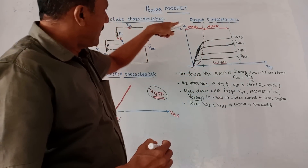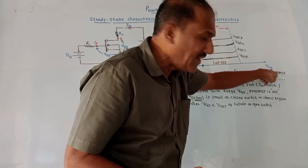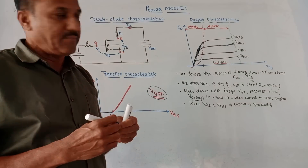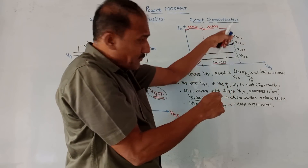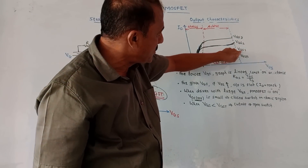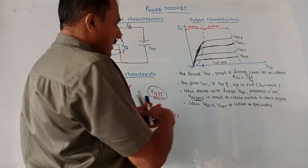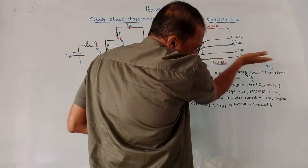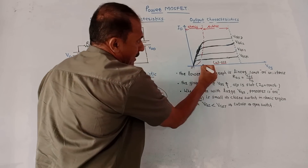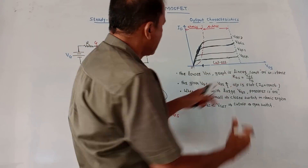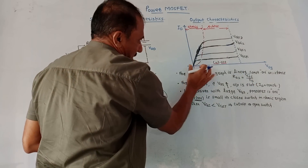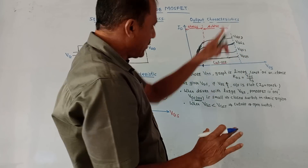Next is the output characteristic, which is a graph of ID versus VDS — voltage between drain and source. There are different graphs for different values of VGS: VGS1, VGS2, VGS3, and so on. From zero up to a certain point we have lower values of VDS — this particular region where values of VDS are lower is called the ohmic region. After that, whatever region you get is the active region.